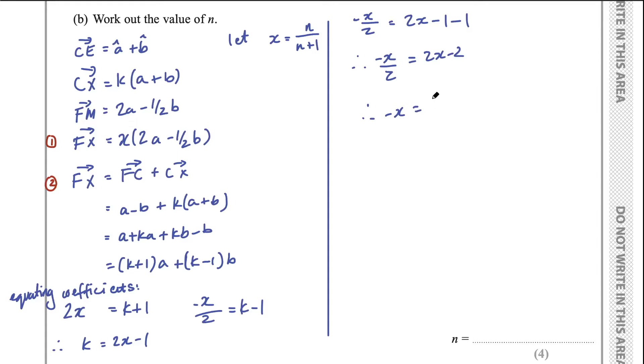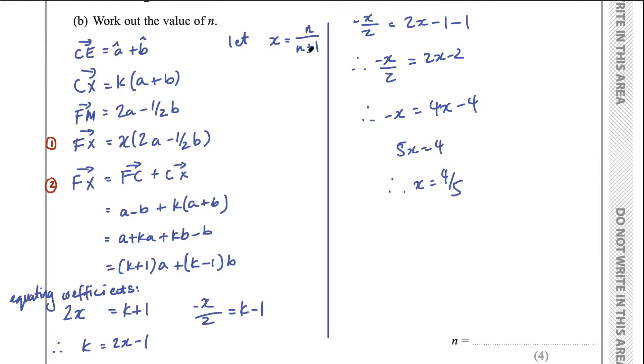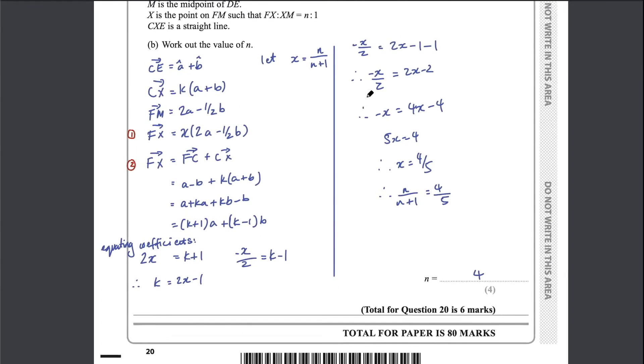And then simplify this however you like. You could add that X to the right-hand side, add the 4 to the left-hand side. We would get 5X equals 4. Therefore, X equals 4 on 5. And remember that we let X equal n over n plus 1. So, therefore, n over n plus 1 equals 4 on 5. So n must be 4. So you could rearrange, you could cross multiply and solve, or you can just see that n must be 4 in this case. So final answer there is 4.